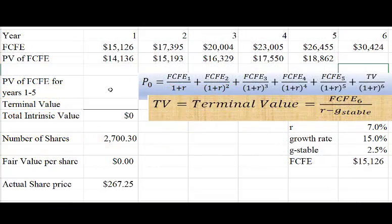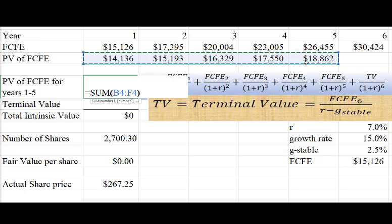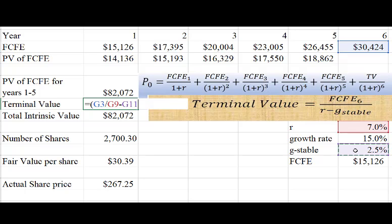The next thing I want to do is just add up the present value of the future cash flows for the first five years, so we'll say equal sum and highlight those cells. Now the terminal value — which is where most of the value of the company lies — that's going to be equal to whatever that free cash flow to equity is in that year, divided by R minus G stable, the stable growth rate. But remember, the whole terminal value is then divided by one plus R to the power of six.